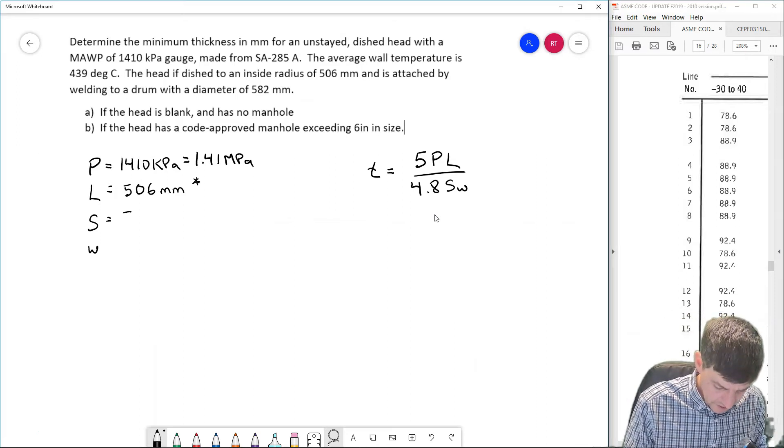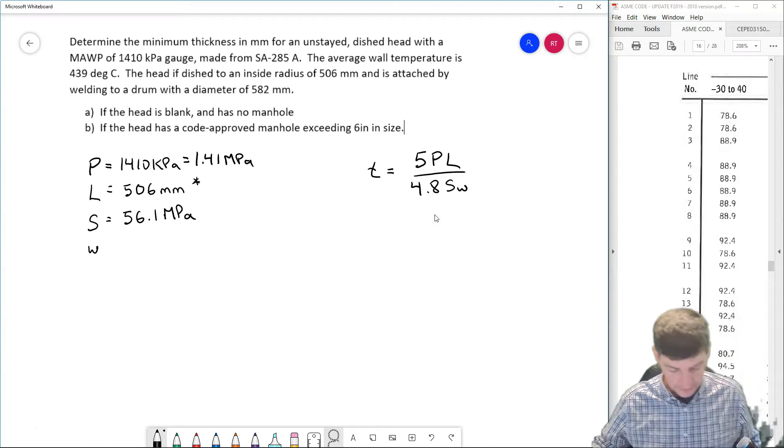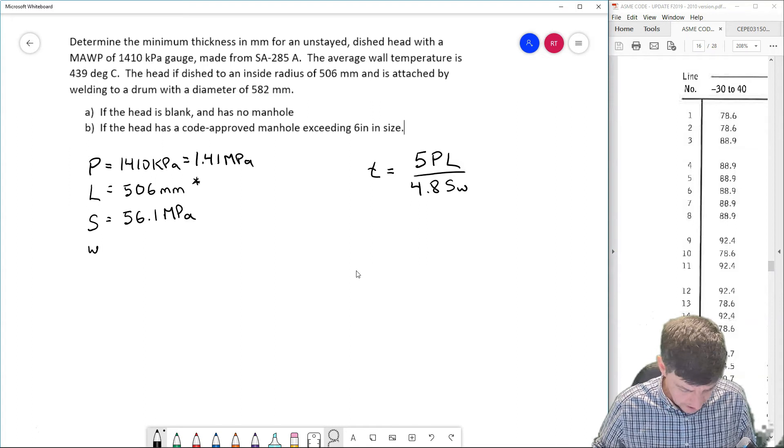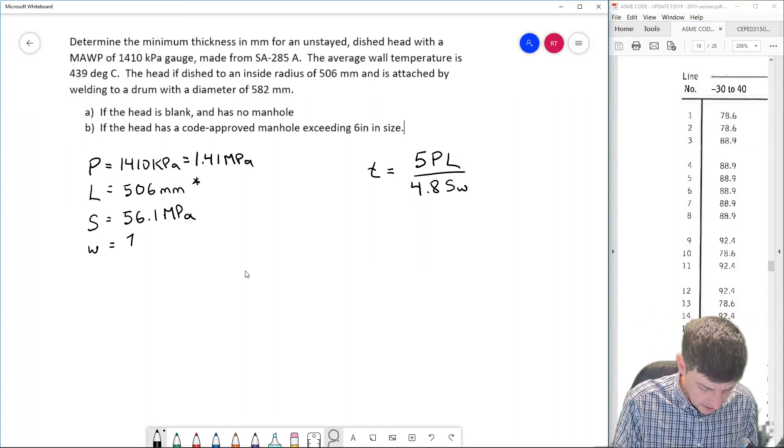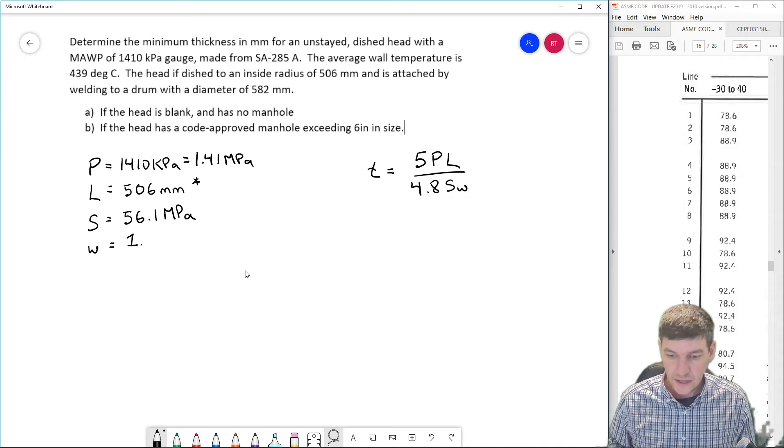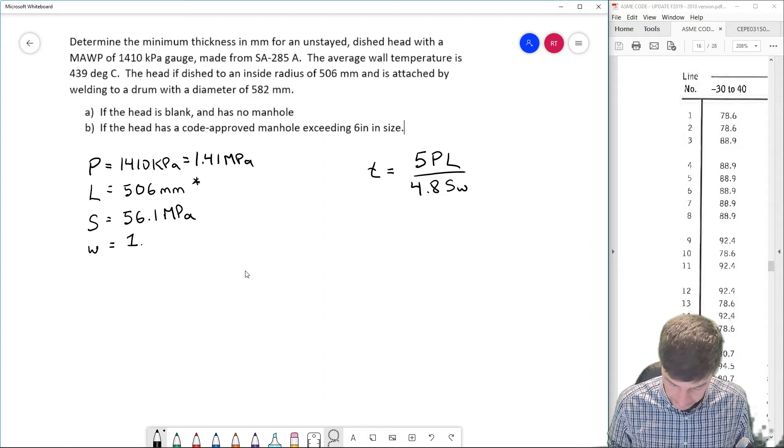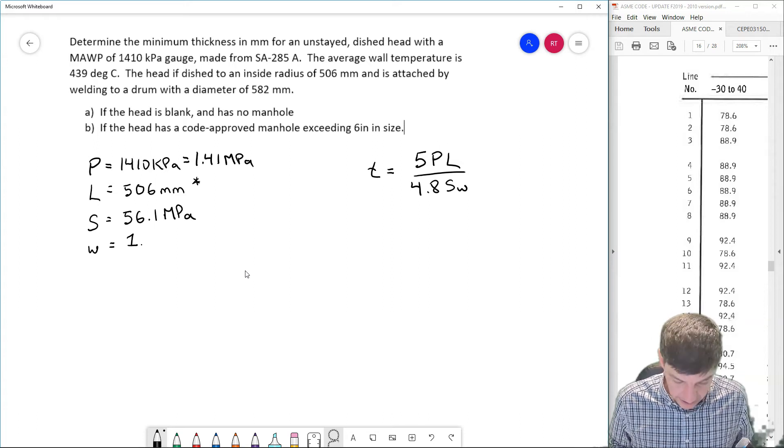So my S value is 56.1 megapascals. I won't go back through it again, but similar to we've done before, my W value ends up being one. I don't have a designated material and I'm not hot enough to designate that it's going to have any defects under high temperature creep. Okay, so looks like I have everything that I need.